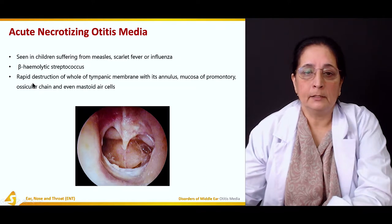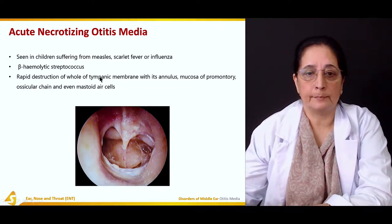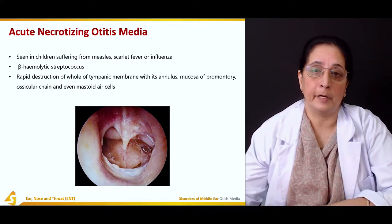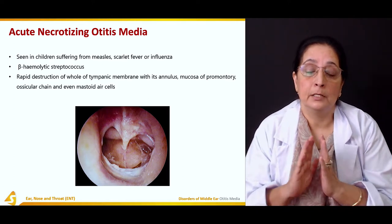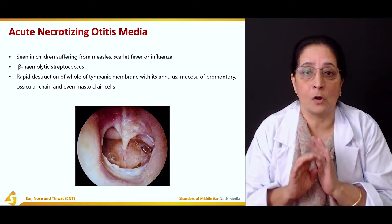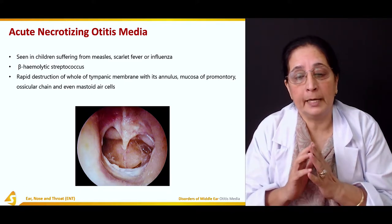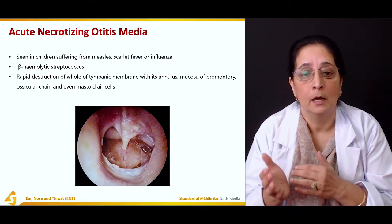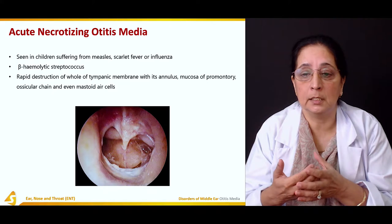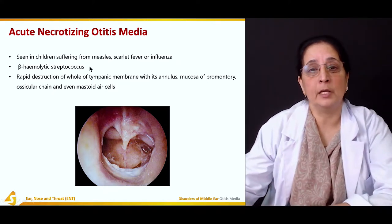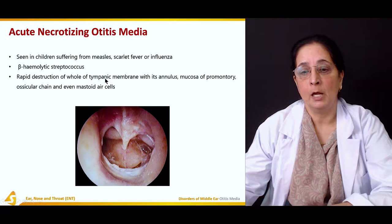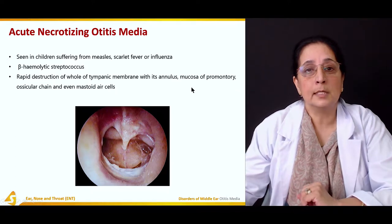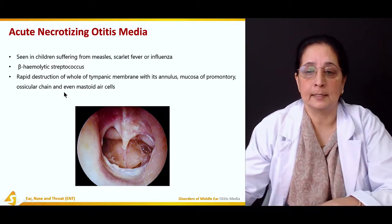As a result of infection by beta hemolytic streptococcus, there is destruction of the whole tympanic membrane. It is a necrotizing condition — it destroys the whole tympanic membrane with its annulus, mucosa of the promontory, the ossicular chain, and even the mastoid air cells.